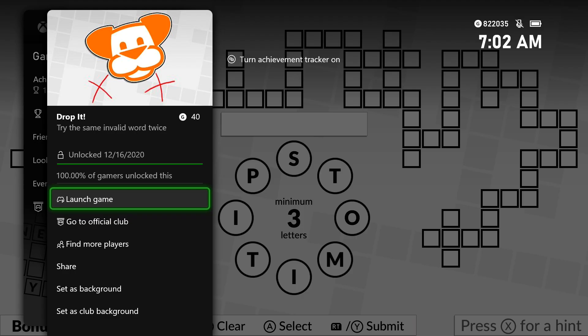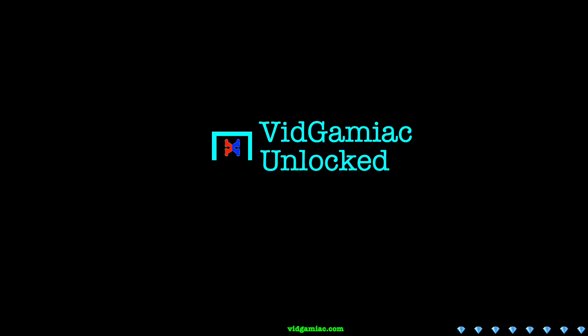We're using the same invalid word two times in a row and that should get us our achievement, 40 gamer score. And that's all there is to it.